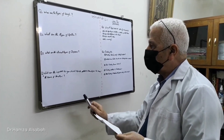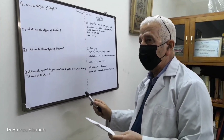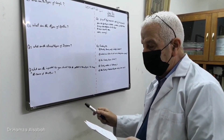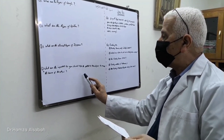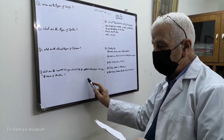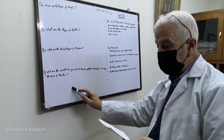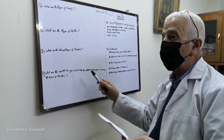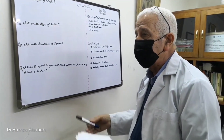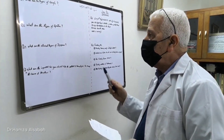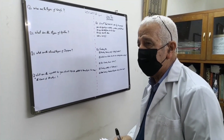If hemoptysis is associated with shortness of breath, this is pulmonary edema due to left ventricular failure. If hemoptysis is associated with shortness of breath and chest pain, this is due to pulmonary embolism. If hemoptysis is associated with signs of connective tissue disease, those are the most important questions you should ask a patient with hemoptysis.